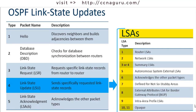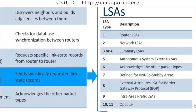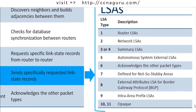A link state update can contain many different types of link state advertisements. There are actually 11 different types of OSPF version 2 LSAs, shown here on the right side. These LSAs are the different message types a router might receive as part of an LSU. In CCNA we really focus on types 1 through 5, while types 6 through 11 are more advanced areas.